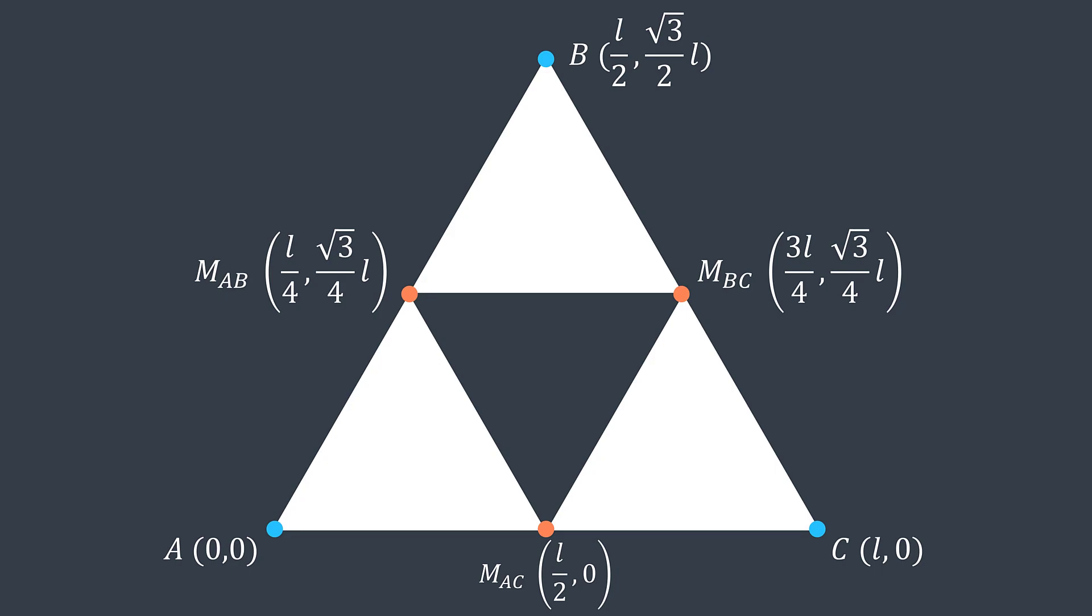After doing so, we'll get three new sub triangles. What do we do? We just recursively apply the same thing for them.